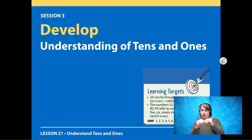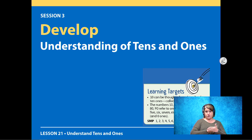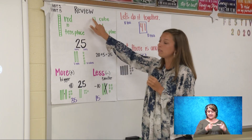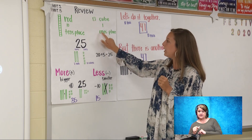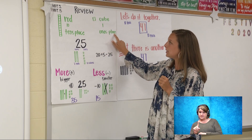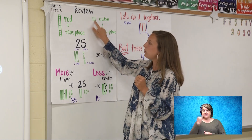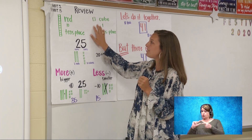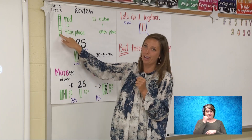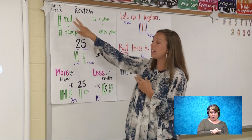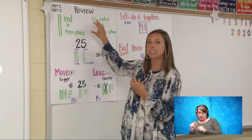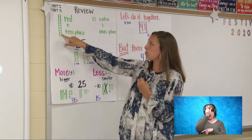We're going to review. We have a rod. A rod is 10. It stands for the tens place. We also have cubes. A cube is one and one is for the ones place. If I have 10 cubes, I have one rod. If I had 20 cubes, I would have two rods because there's 10 cubes in each rod.